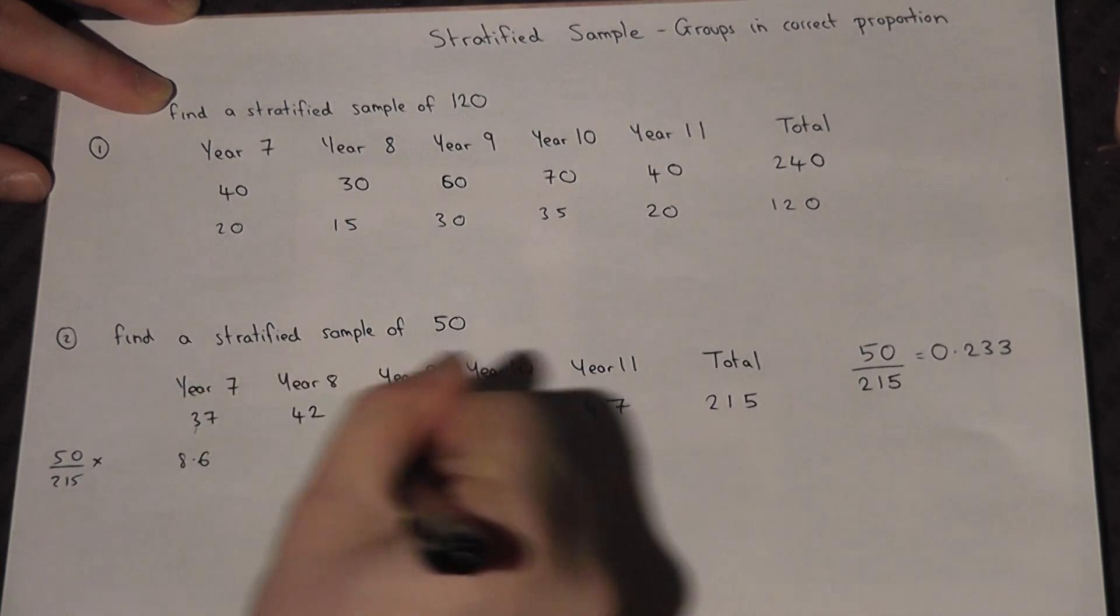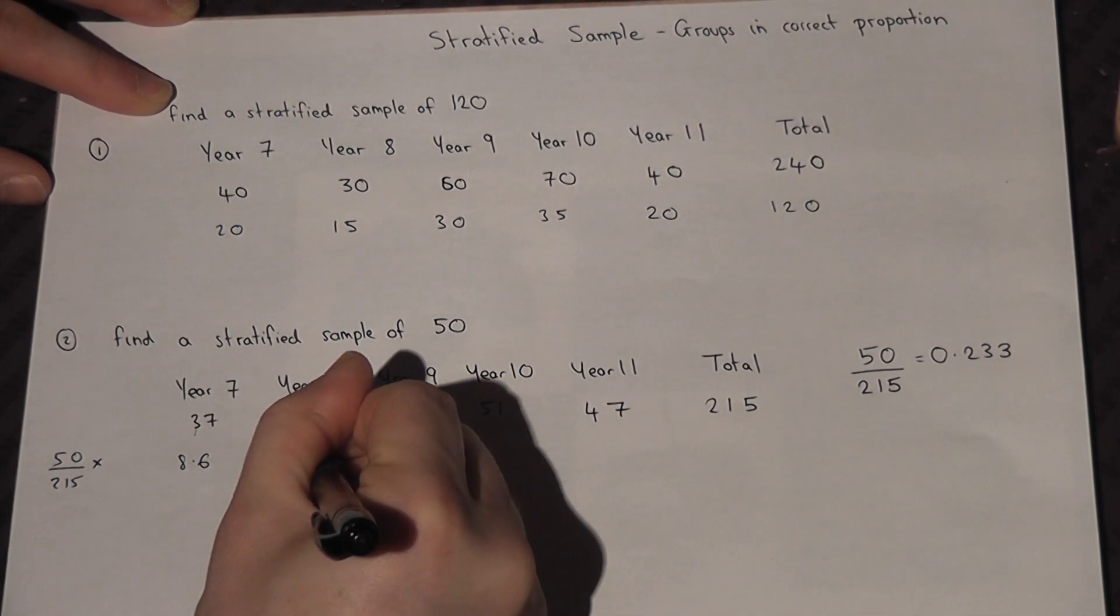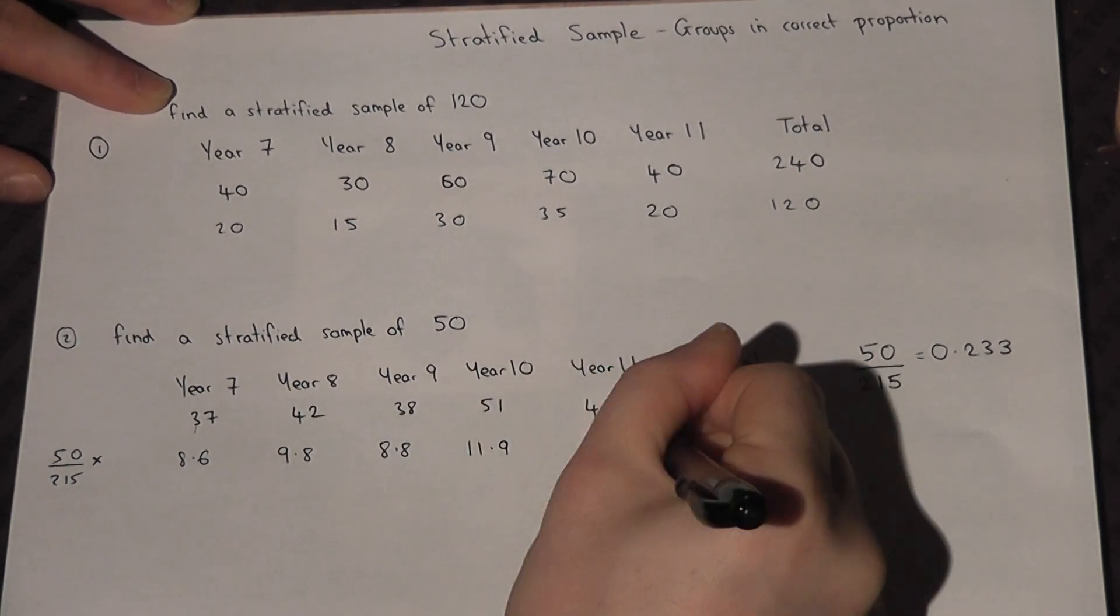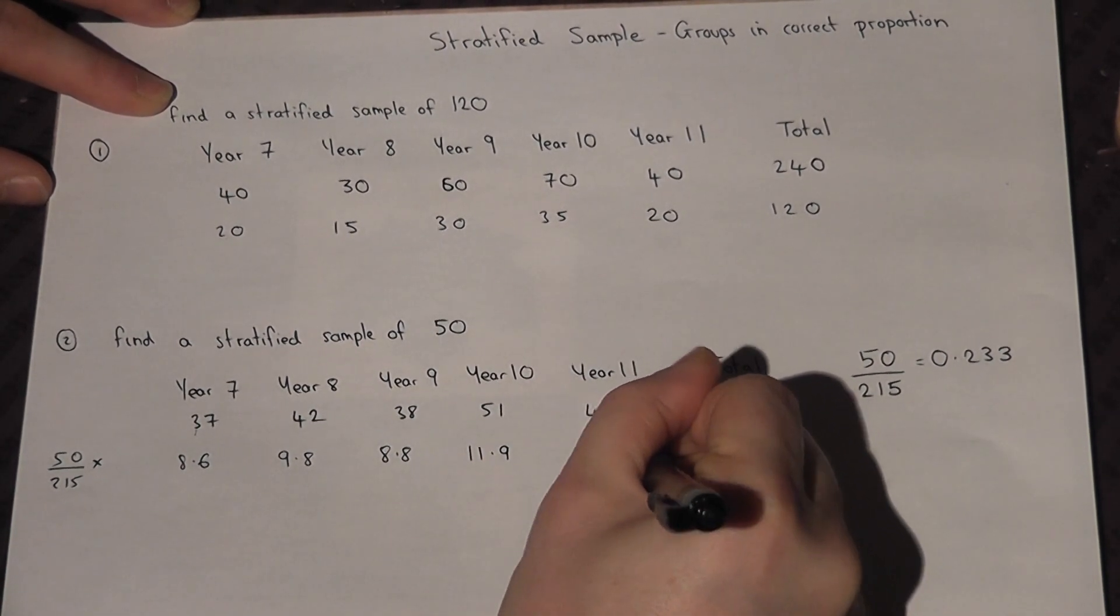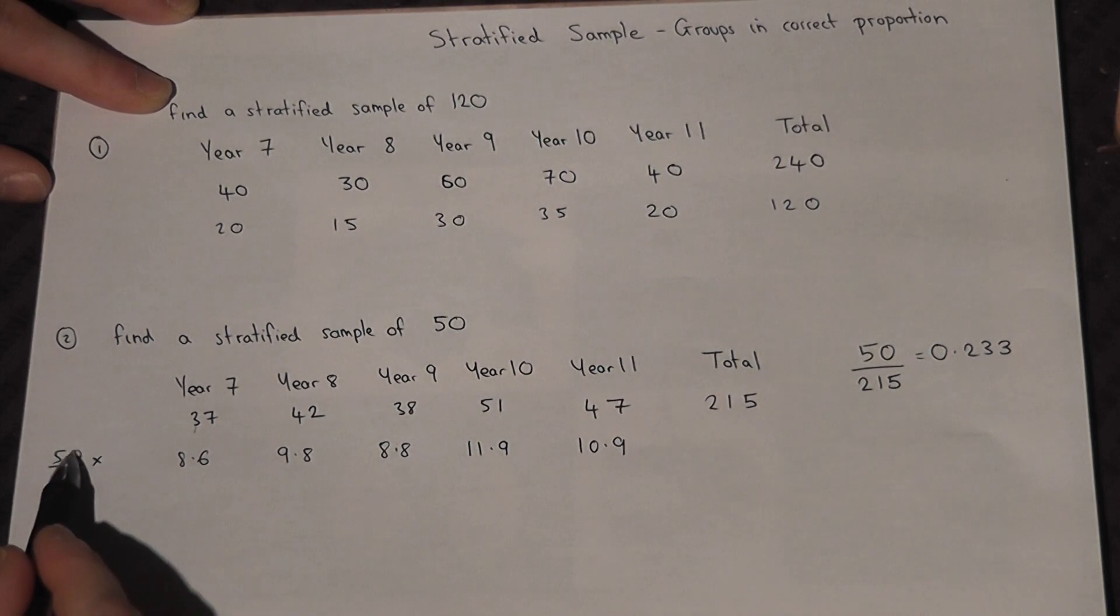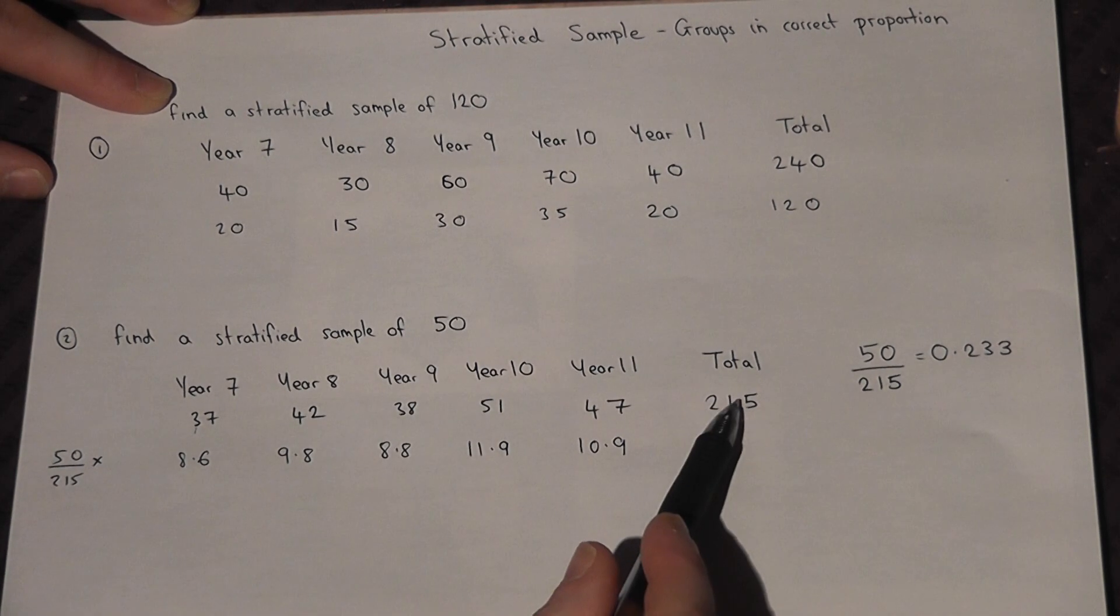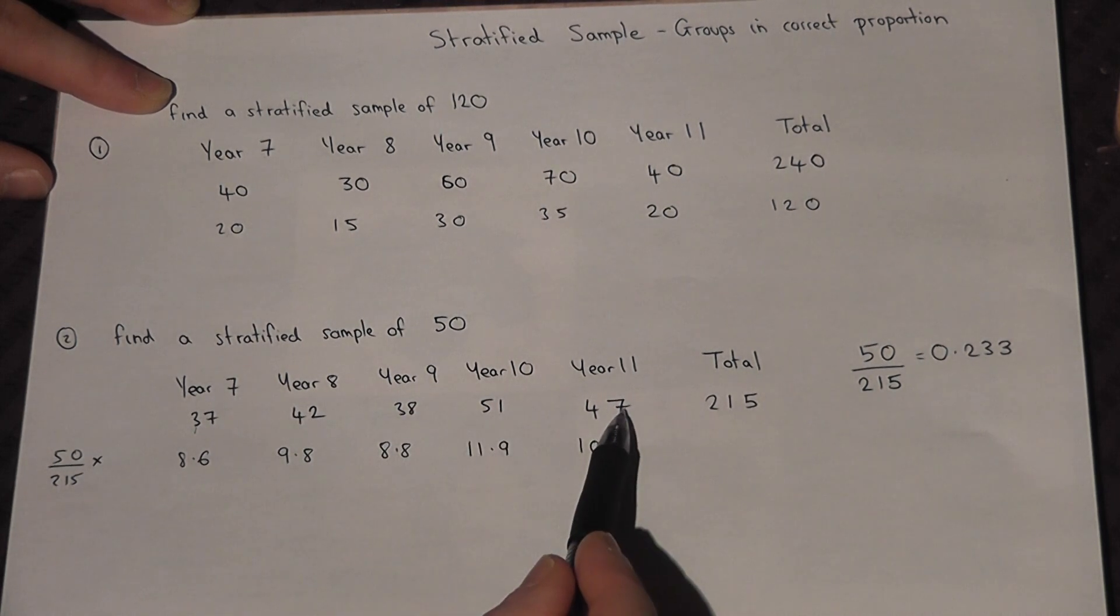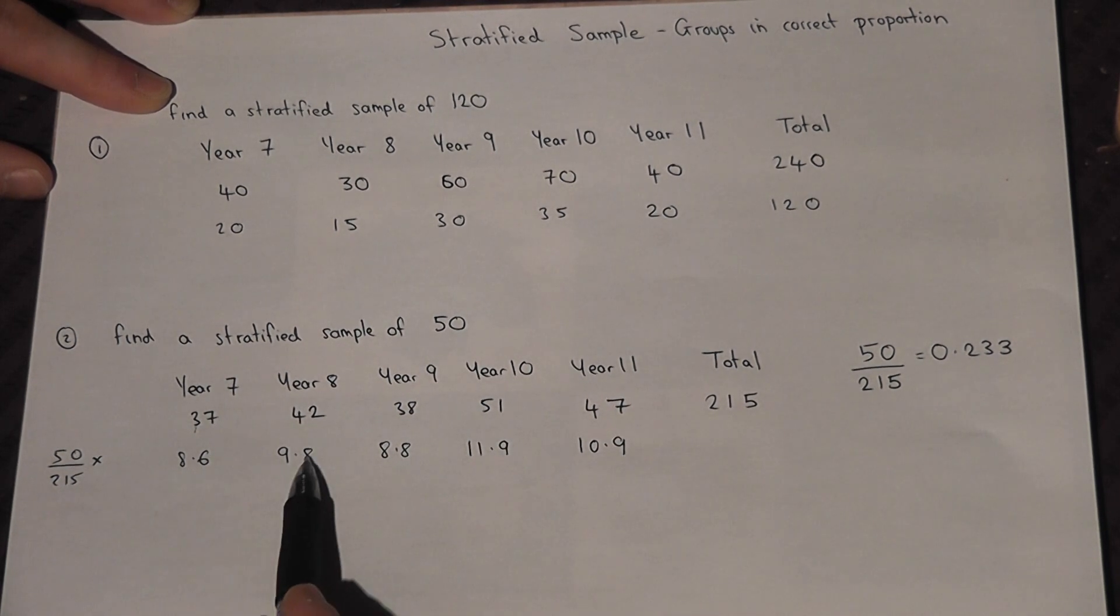So we do 50 over 215 times by each separate group and you get the following numbers all to 1 decimal place: 8.6, 9.8, 8.8, 11.9, and 10.9. So again I've worked out this fraction of sample size over total and times each separate group by this number to work out some new numbers.